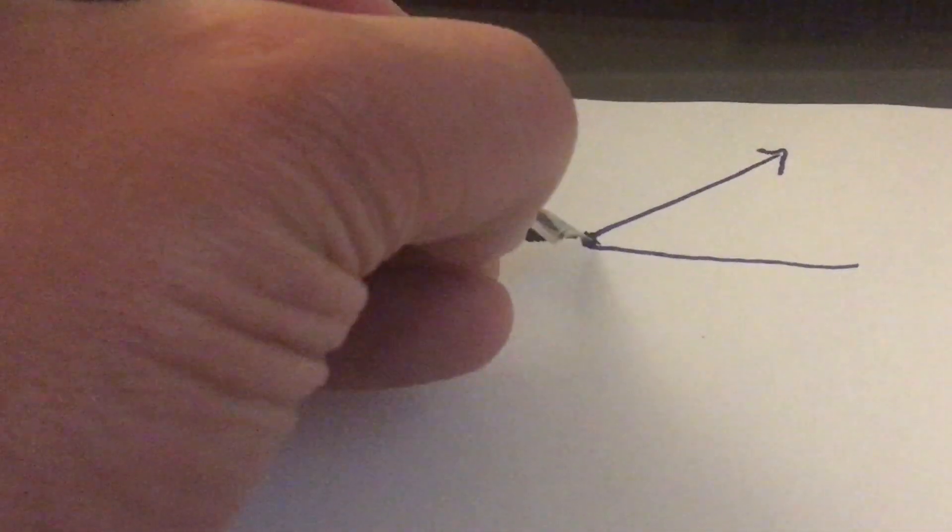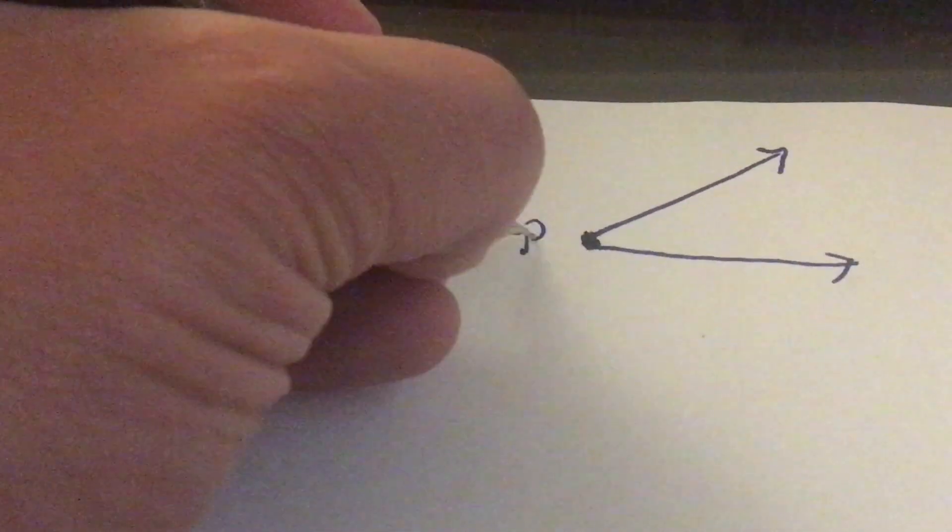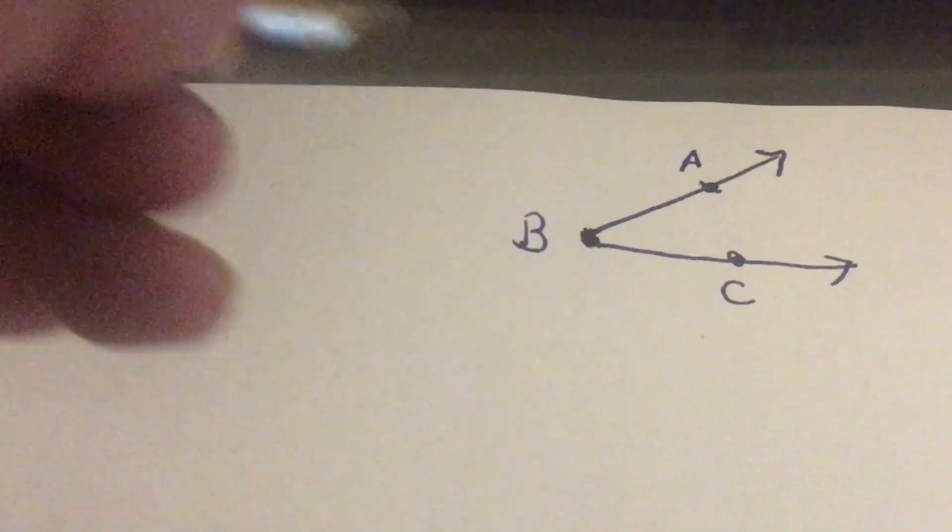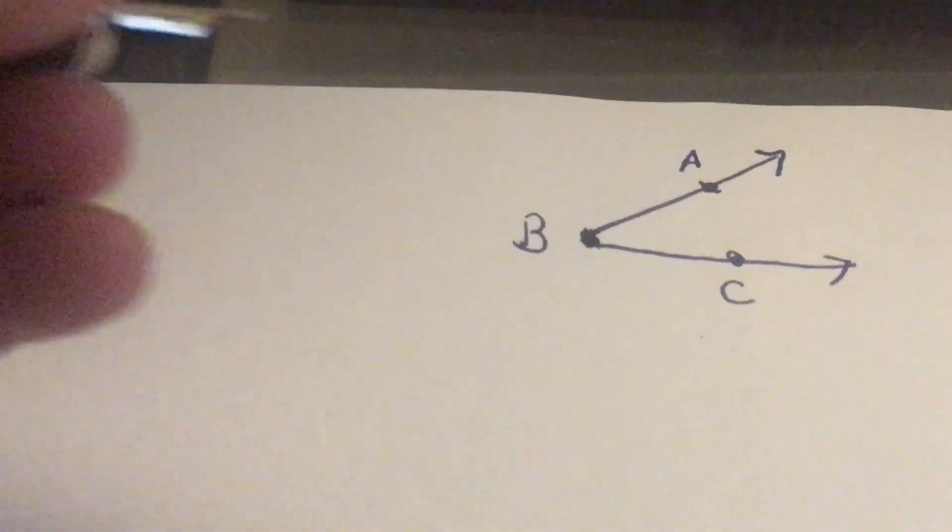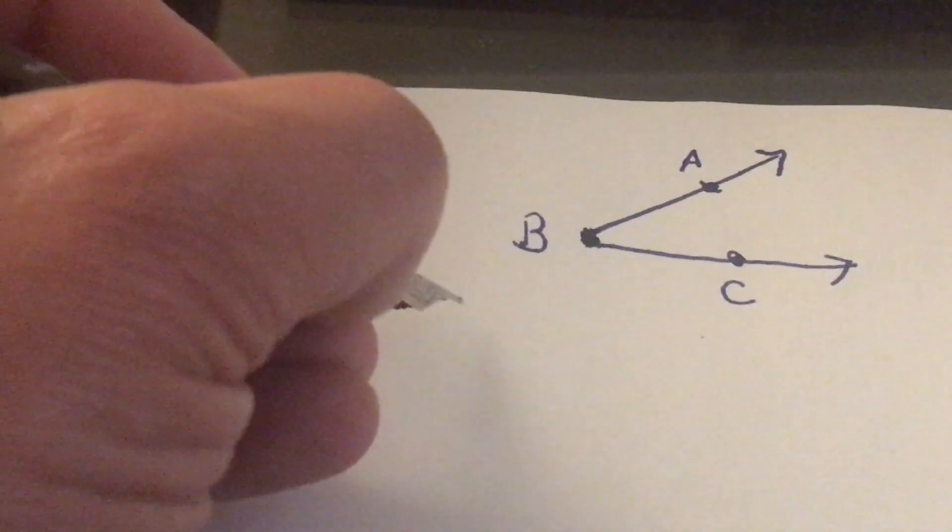That common endpoint is known as the vertex, which we're going to call B. Then we can label the two sides, which are our two rays, as A and C. Now we're trying to label or name the angle so that we know what it is. We can first of all just name it by the vertex, so we can call it angle B.